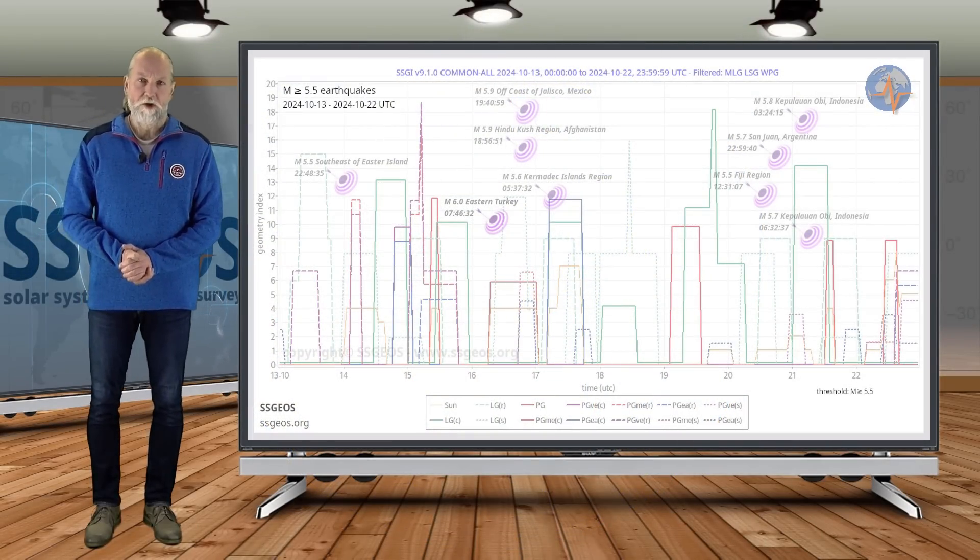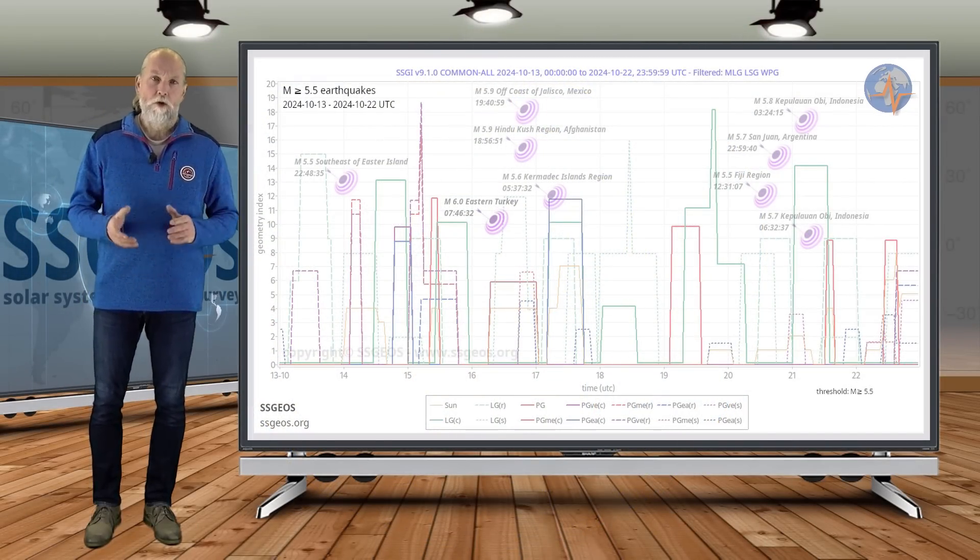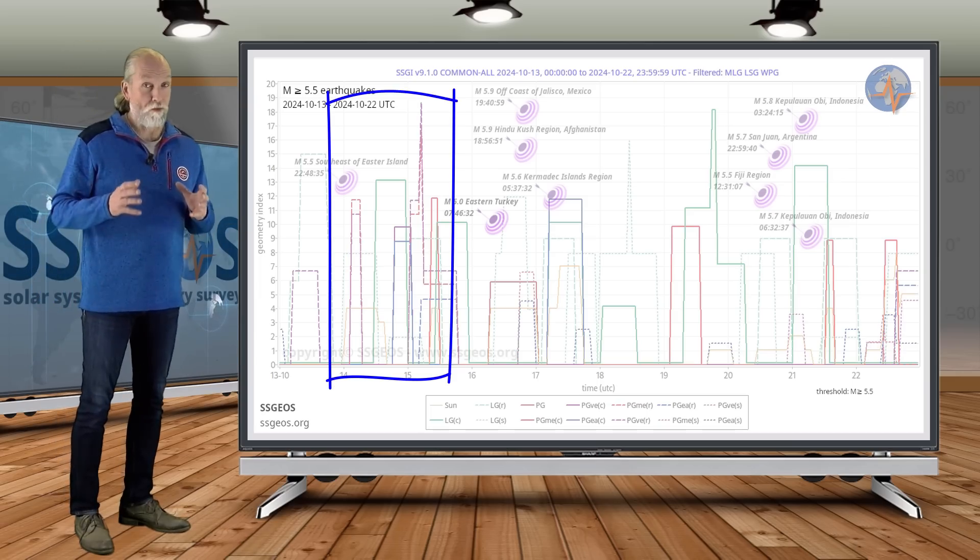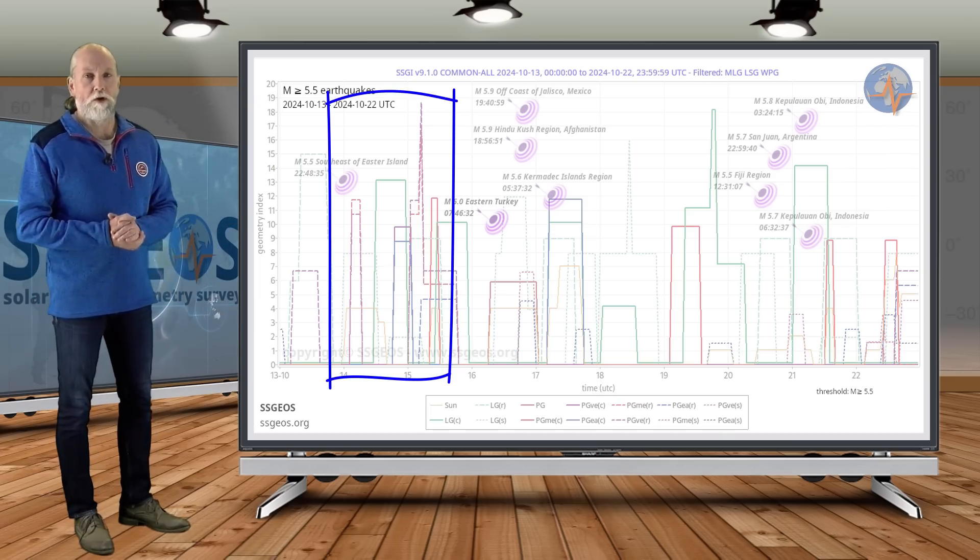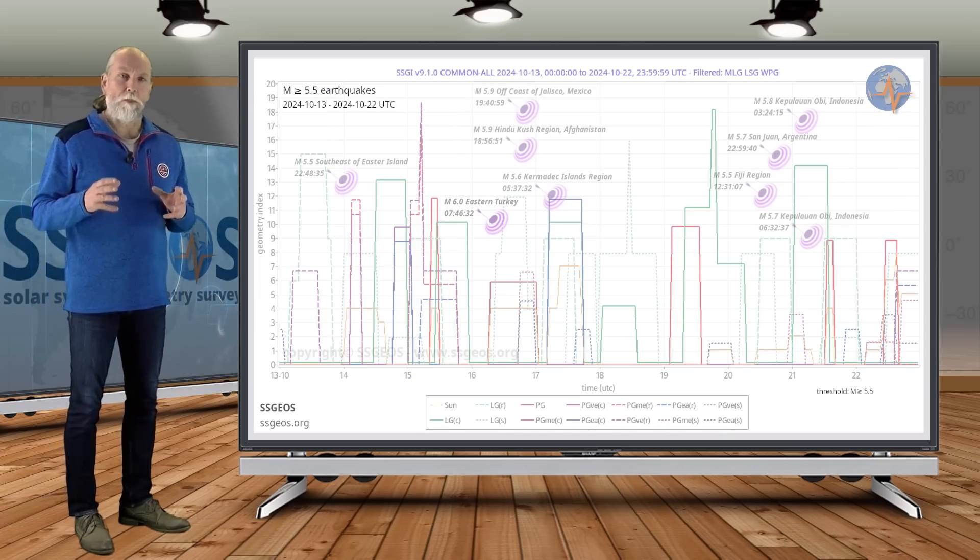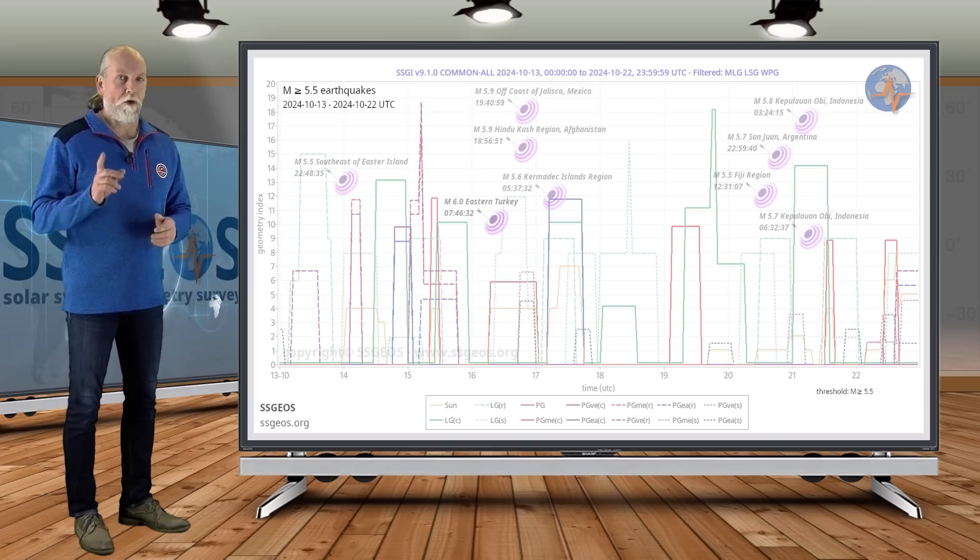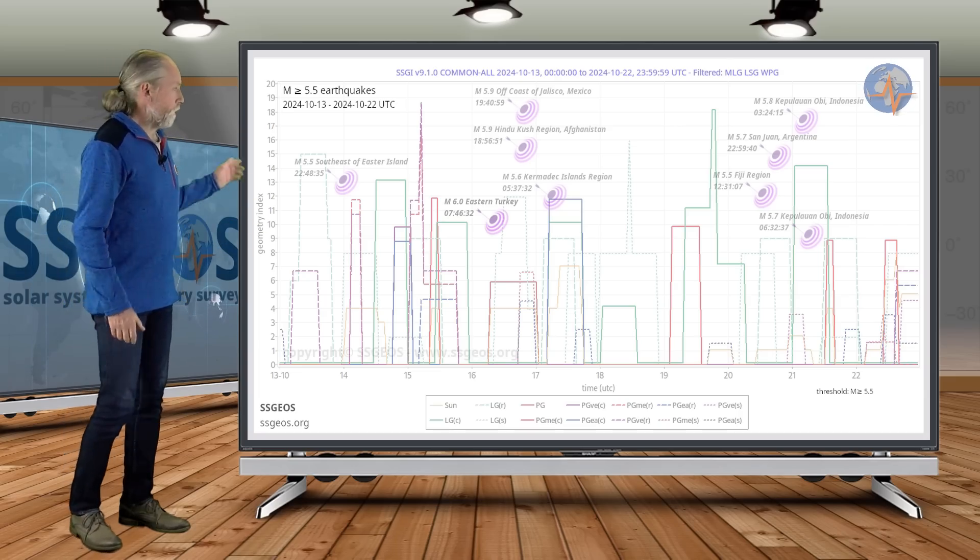Welcome to a new planetary and seismic update. You may recall from the previous update that we had critical geometry on the 14th and 15th—a convergence of planetary and lunar geometry that had the potential to trigger a major earthquake around mid-7 magnitude. So far that didn't happen.